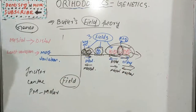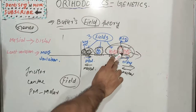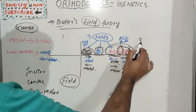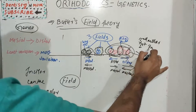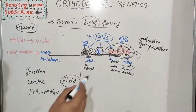Considering each quadrant separately, the molar-premolar field has the first molar as the key tooth, with the second and third molars on the distal end of the field and the first and second premolars on the mesial end. This theory predicts that the third molar and the first premolar would be the most variable in size and shape.